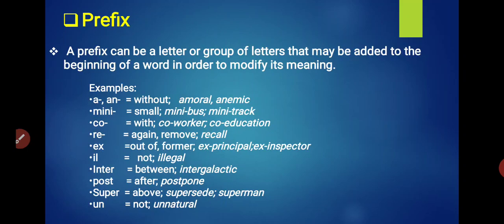The next word is MINI. Mini means small, like mini bus, mini truck. So mini is a prefix. Next prefix is CO. CO means with, like co-worker, co-education. Co-worker or co-education are words very familiar to all of you. Next is RE. RE means again, like remove, recall. When we are doing something again, we use RE.